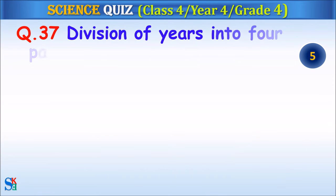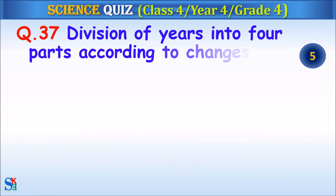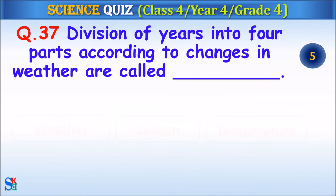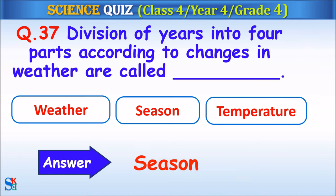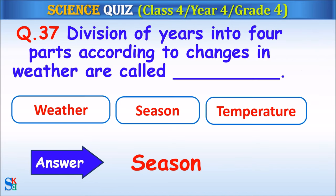Question 37: Division of years into four parts according to changes in the weather are called — weather, season or temperature? Your time starts. The answer is season.